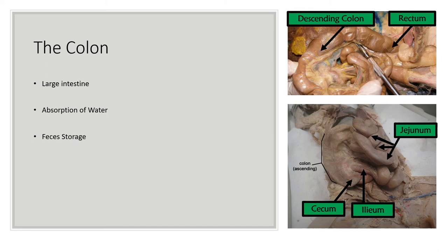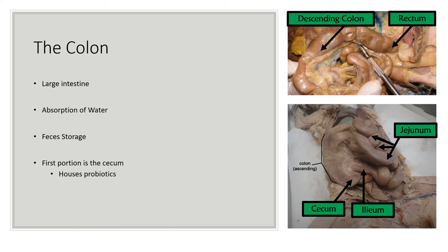Feces is also stored in the colon. The first portion of the colon is the cecum, on the ascending side of the large intestine — this is where probiotics are housed. The cecum kind of looks like a finger, and in front of it you'll notice the ileum, that very last portion of the small intestine. So if you find one, you find the other.